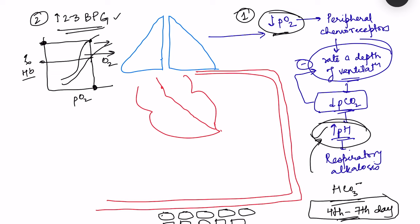With the rightward shift, percentage hemoglobin saturation decreases such that there is increased delivery of oxygen to the tissues. However, the respiratory alkalosis causes an increase in pH, which tends to shift the oxyhemoglobin dissociation curve to the left, partially opposing the effect. The maximum benefit from 2,3-BPG takes time to develop, but ultimately the net result is a slight rightward shift, increasing oxygen delivery to tissues.